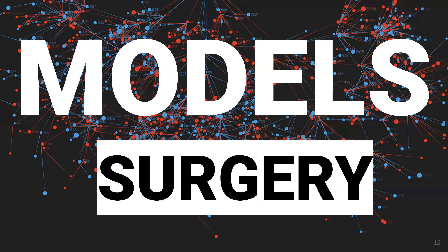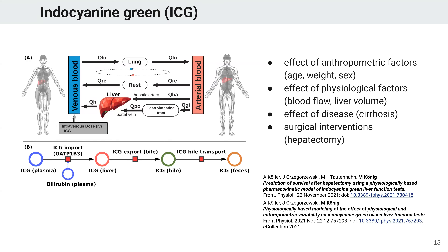Other examples of such models is application in a surgical context — we can basically study in silico hepatic operations such as hepatectomies. To study that, we developed a model of ICG, indocyanine green, covering its distribution and uptake in the body and subsequent biliary export. We used the model to study anthropometric factors such as age, weight, and sex, physiological factors like blood flow and liver volume, and the effect of disease. Most interestingly, we also simulated surgical interventions and performed stepwise hepatectomies to see how this would affect function via ICG.